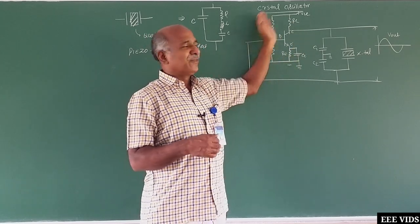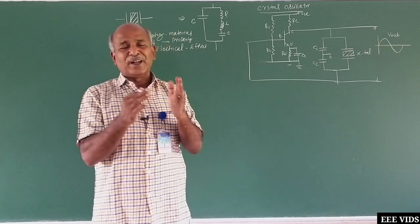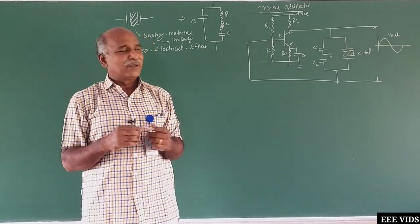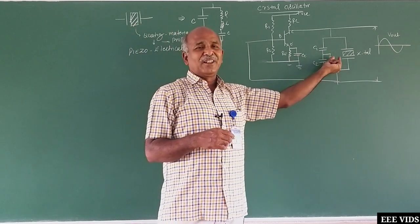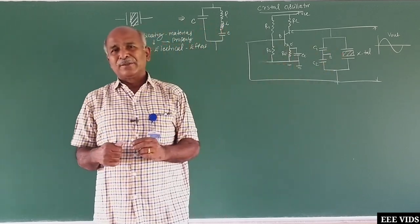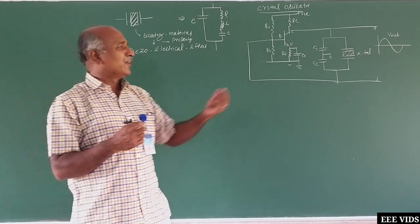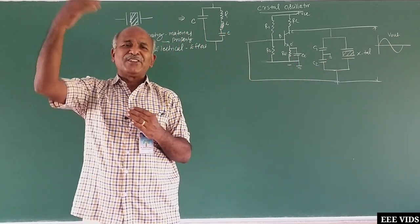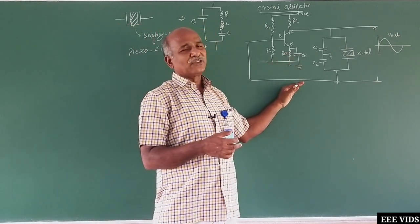Crystal oscillators also come in IC versions. The IC is connected and the output is created. When supply is given, the crystal starts to vibrate. The vibration frequency depends on the size of the crystal material — the smaller the size, the higher the megahertz range. The operating frequency of microcontrollers and microprocessors depends on the crystal. We can generate any range of frequency with less cost, smaller size, and no losses. That is why most circuits use crystal oscillators.